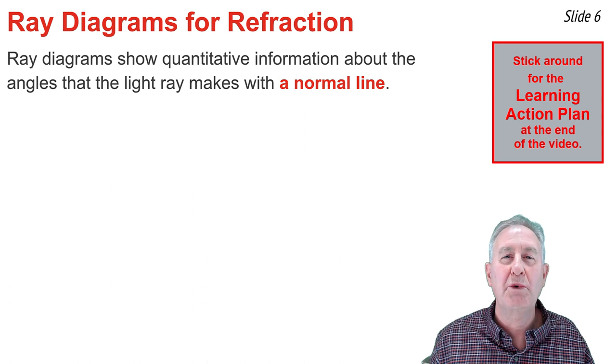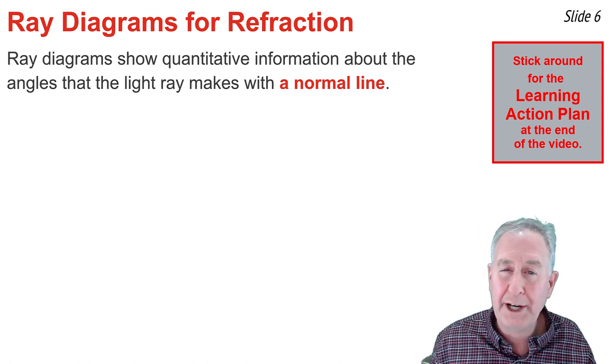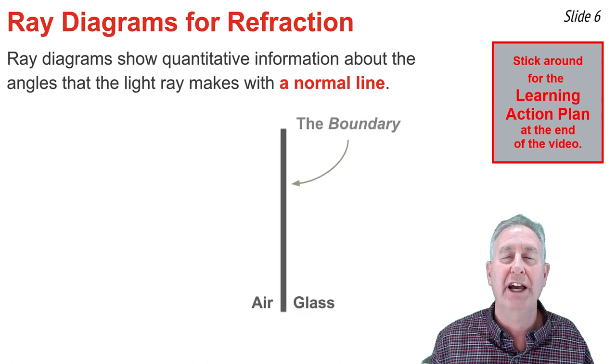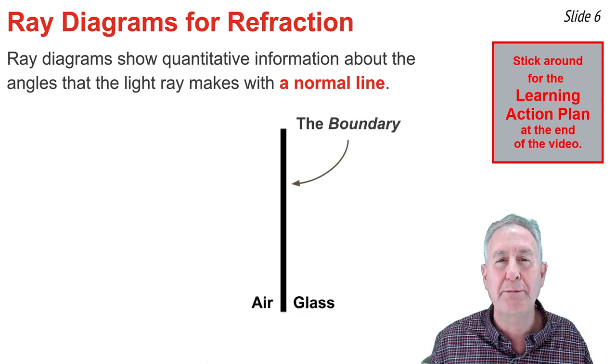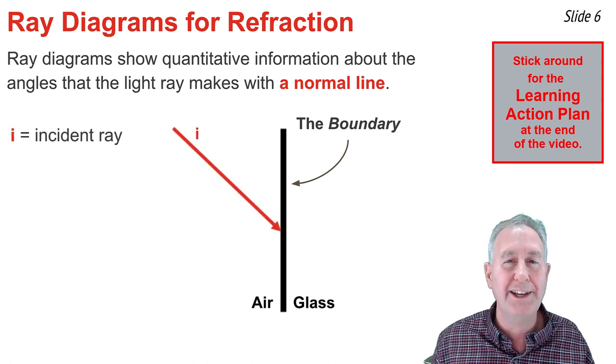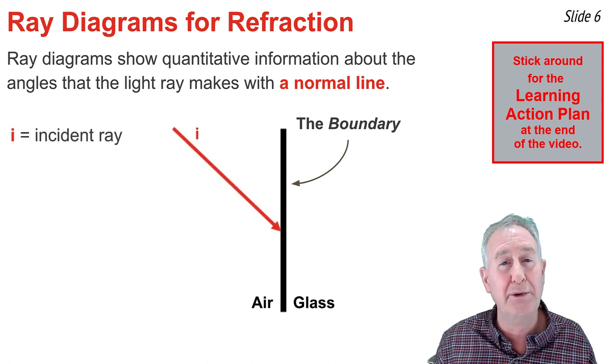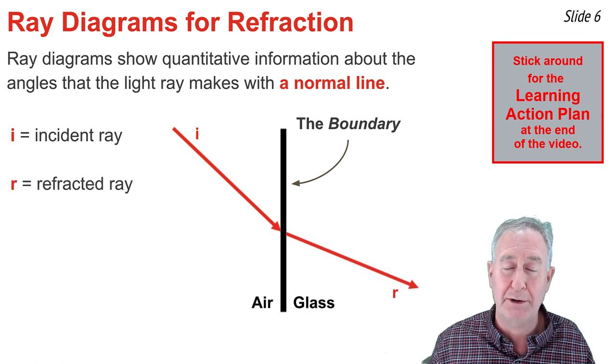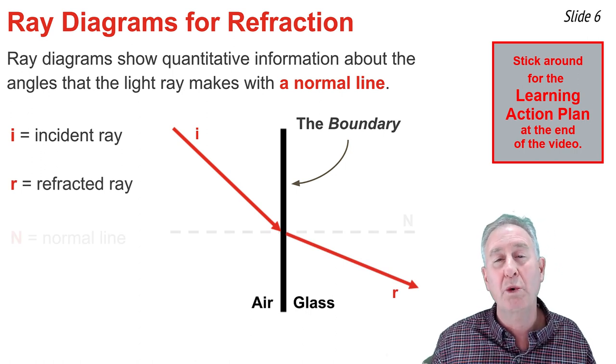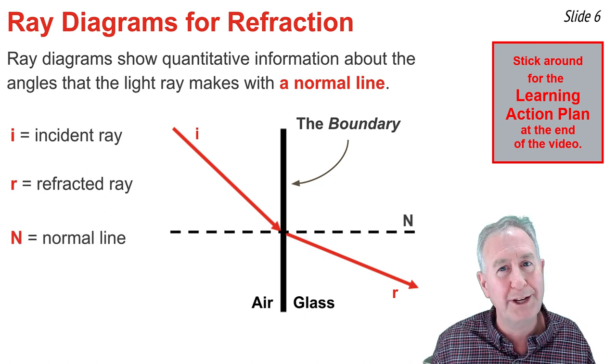When drawn with accuracy, ray diagrams can reveal quantitative information about the refraction situation. Let's consider light that's traveling through air and approaching the boundary with glass. If we were to represent the situation by a ray diagram, we would draw the incident ray approaching the boundary and the refracted ray leaving the boundary. And at the location where the incident ray meets the boundary, we're going to draw a dashed line perpendicular to the boundary.